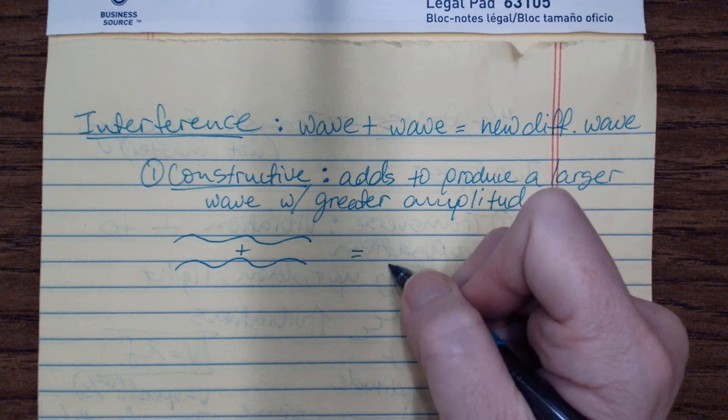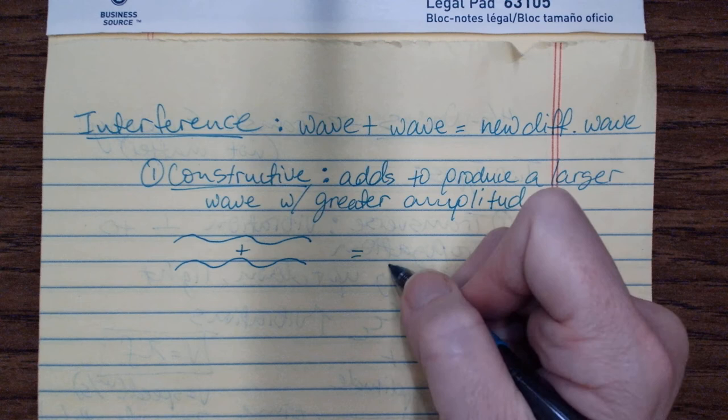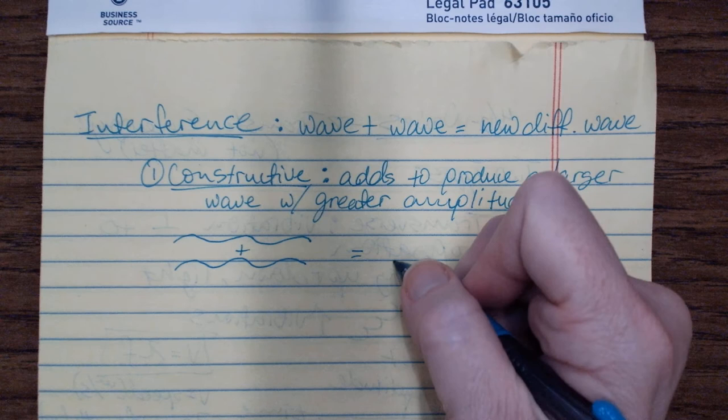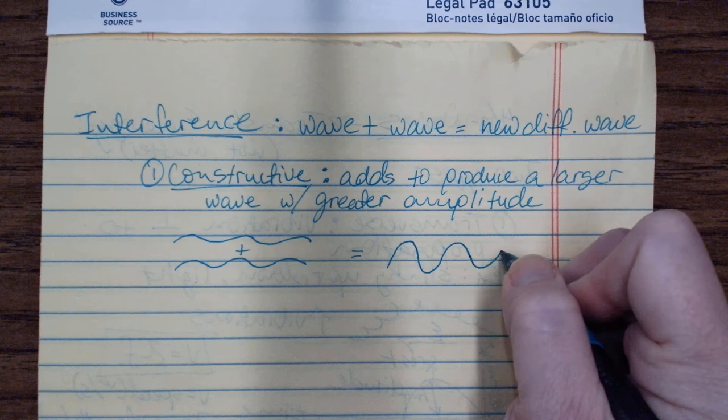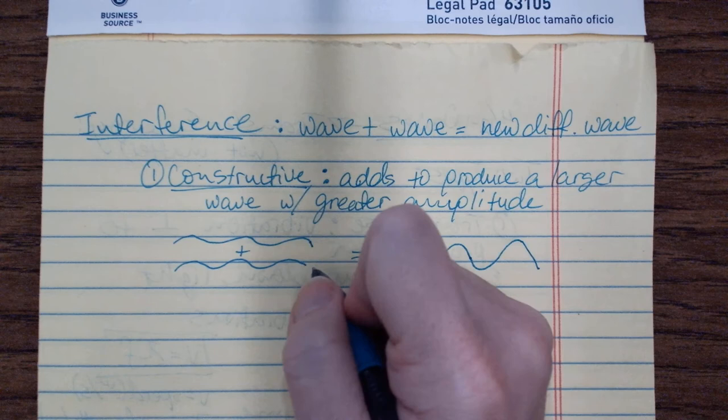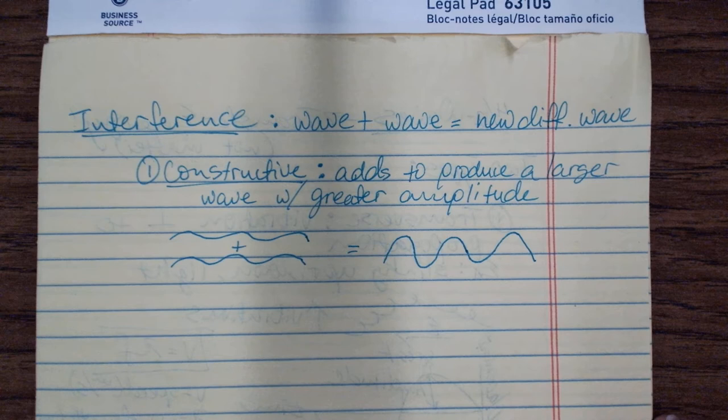When you add two waves together with constructive interference, what you end up with is a wave that has the same wavelength — the same number of waves — but with higher amplitude.